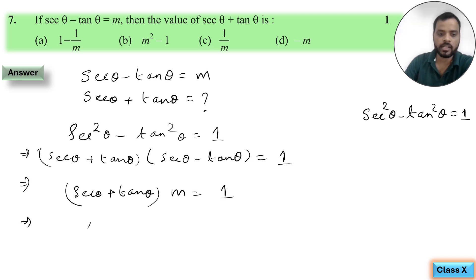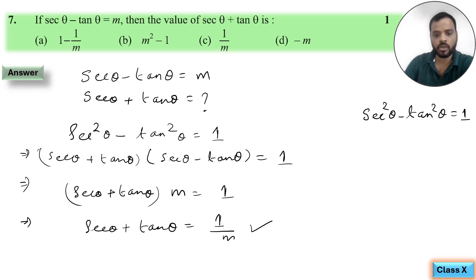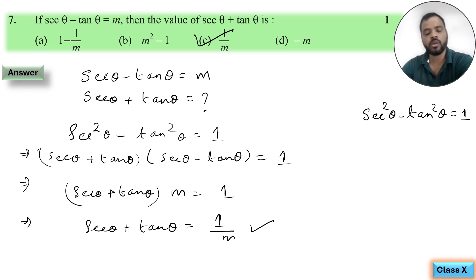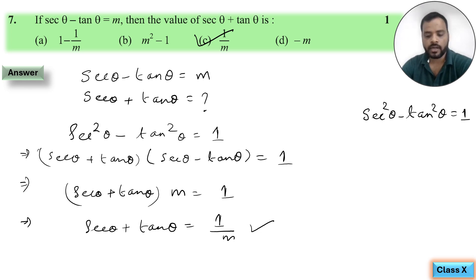अब sec θ plus tan θ is equal to 1 by m — यह हो गया हमारा answer. So option C qualifies. Now let us go through the next question.